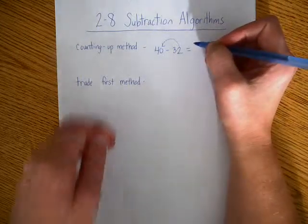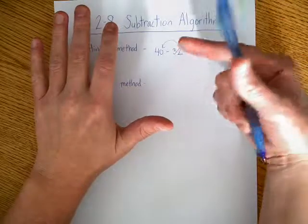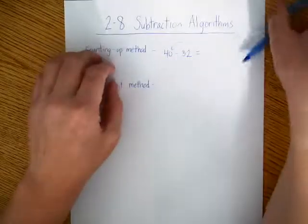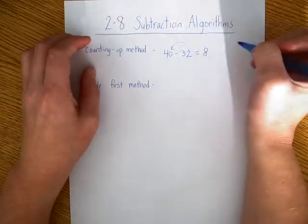And I'd say 32, 33, 34, 35, 36, 37, 38, 39, 40, and I would get 8. So I can just count up from the smallest number to the biggest number. That's how we do the counting up method.